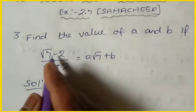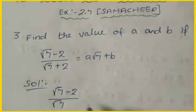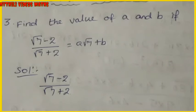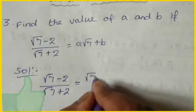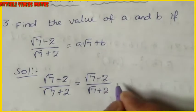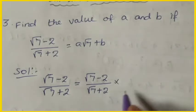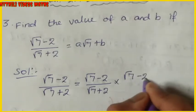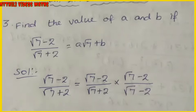First, write the left-hand side: (√7 − 2) / (√7 + 2). To simplify this, we need to take the conjugate of the denominator. The conjugate means using the opposite symbol, so the conjugate of (√7 + 2) is (√7 − 2).